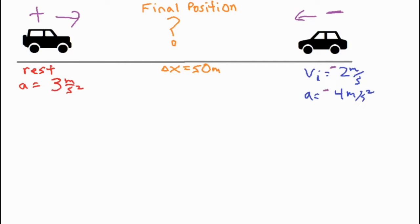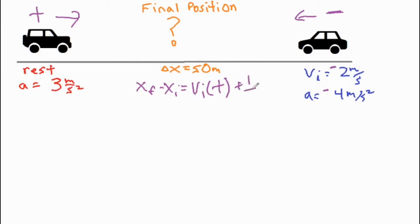Now we're going to use the same formula for both of our different cars. The formula is: final position minus the initial position equals the initial velocity times time plus one-half acceleration times t squared.